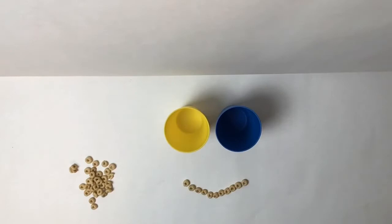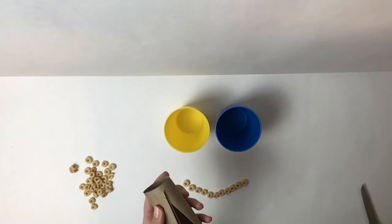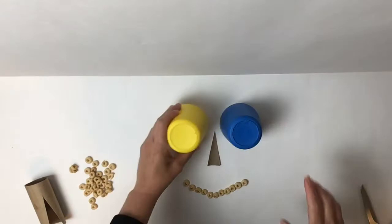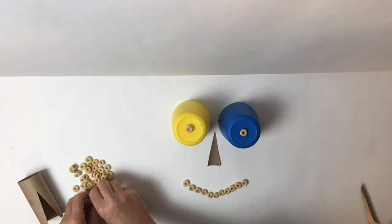I'm gonna get my toilet paper tube out and cut a little triangle out for the nose. There you go. Let's see what else I can do. What happens if I flip my cups around? Oh, I got some eyeballs. And now I'm going to make a few eyebrows.